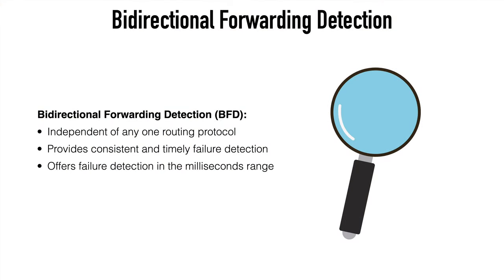Bidirectional Forwarding Detection or BFD is something that's protocol independent, meaning that we can use it with all kinds of different routing protocols such as EIGRP, OSPF, and BGP. So this gives us a more uniform failure detection mechanism. We know that those routing protocols have various hello and keepalive mechanisms with varying timer rates, so BFD is a way that we can have a more consistent failure detection.